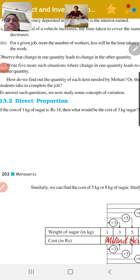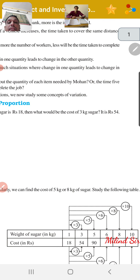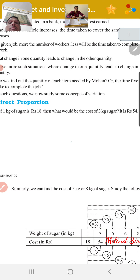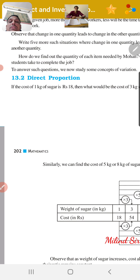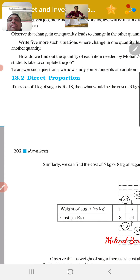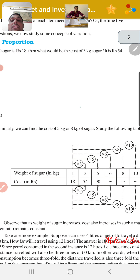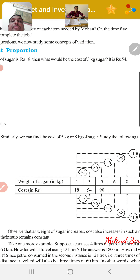How do we find out the quantity of each item needed by Mohan, and the time five students take to complete the job? To answer such questions, we need to study the concept of variation. Direct proportion: if the cost of 1 kg of sugar is 18 rupees, then what would the cost of 3 kg of sugar be? It is 54 rupees.